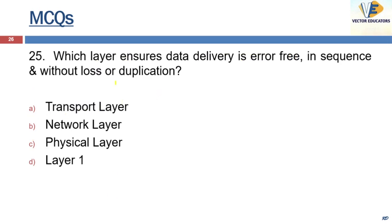Which layer ensures data delivery is error-free, in sequence, and without loss or duplication? The answer is the transport layer, where TCP and UDP are the two protocols.